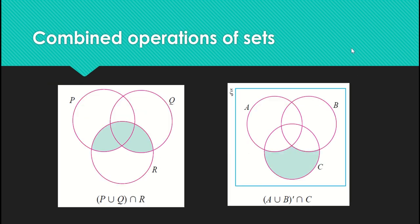The last topic we learned is combined operations on sets, which can include both union and intersection. For example, P union Q intersect R gives a specific region. Another example includes the complement, such as A union B complement, which is the area outside A union B, and when that intersects with set C, we get a specific region as shown.